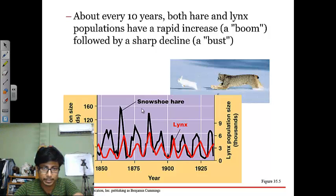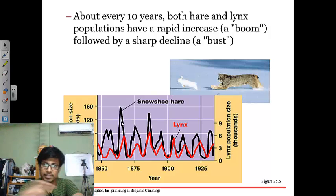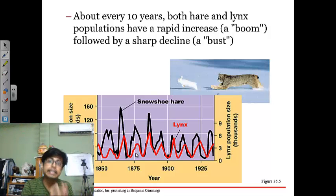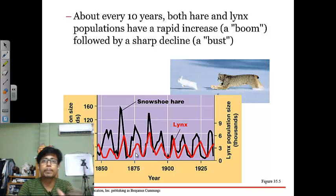A classic example is the snowshoe hare as prey and the lynx as predator. As the snowshoe hare population is high, the lynx population slowly starts to rise. But as predators rise, they eat more prey, so prey populations decline. After some time, when prey is less in the environment, the predator population also goes down. This tells us that the predator relies on the number of prey present for survival — if the prey population goes down, it also brings down the predator population.